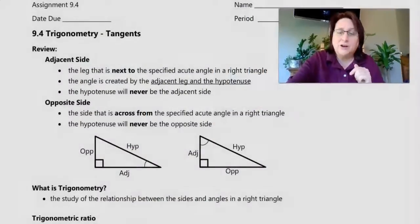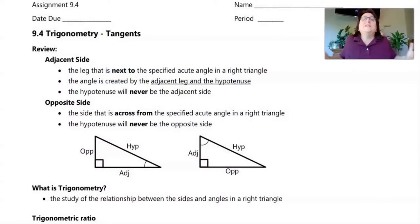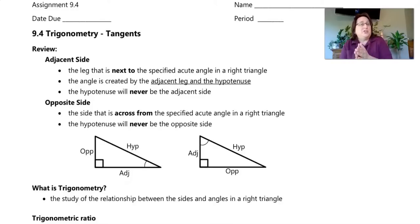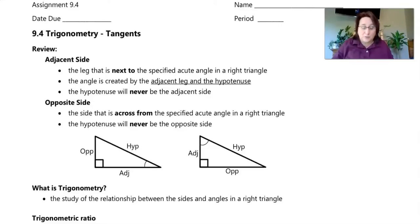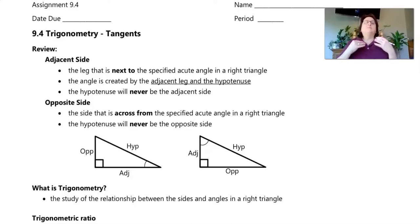Before we do that, let's talk about how do we know when to use which ratio. When we use the tangent ratio, we refer to the adjacent side and the opposite side — and we'll refer to those with all of the ratios. Adjacent means next to — it is a leg that is next to an acute angle of a right triangle. That angle is created by the adjacent leg and the hypotenuse.